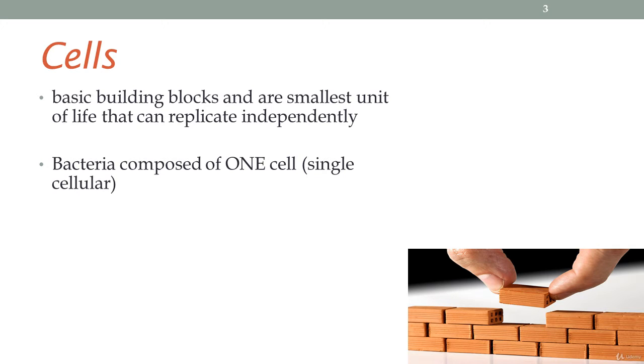Some organisms are made up of a single cell, for example bacteria or amoeba. These are therefore called single cellular organisms. Most other organisms are multicellular, for example us human beings. Our bodies are composed of trillions of different types of cells.